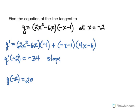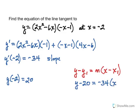So we can utilize point slope form of a line and simply substitute in. So we'd have y minus 20 equals negative 34 times the quantity x plus 2. Remember, it's minus a negative 2. So it turns into plus 2.